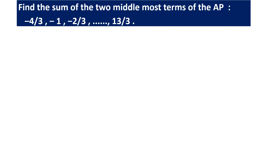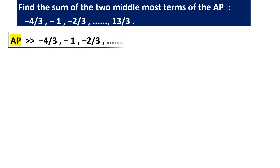Today's first question is: find the sum of two middlemost terms of the AP −4/3, −1, −2/3, and so on, where the last term is 13/3. To find the sum of the two middlemost terms, we first need to know how many terms are there in the AP, but the number of terms is not given in the question. So we cannot find the two middlemost terms unless we know n.